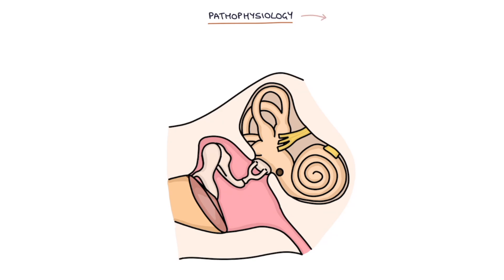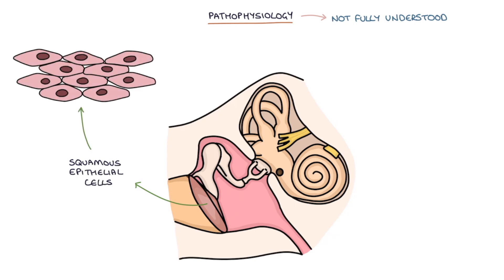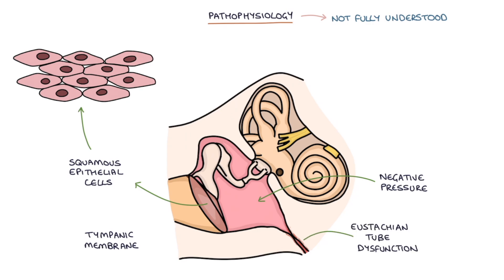The pathophysiology of cholesteatomas is not fully understood. Squamous epithelial cells originate from the outer surface of the tympanic membrane. The main theory is that negative pressure in the middle ear caused by eustachian tube dysfunction causes a pocket of the tympanic membrane to retract into the middle ear.